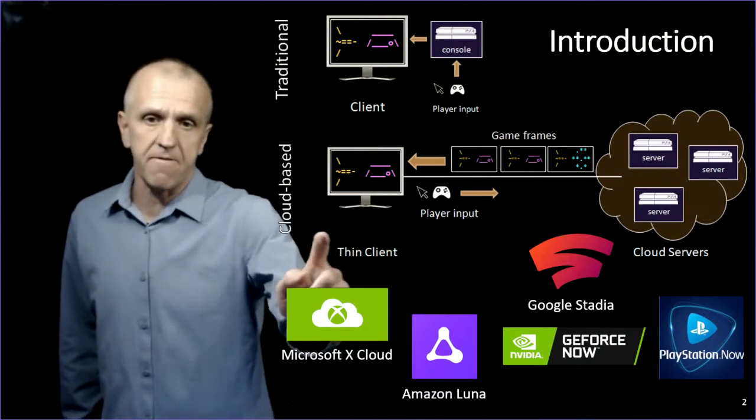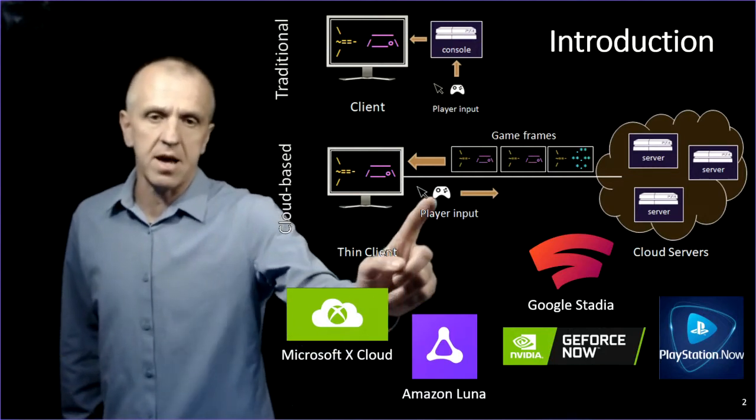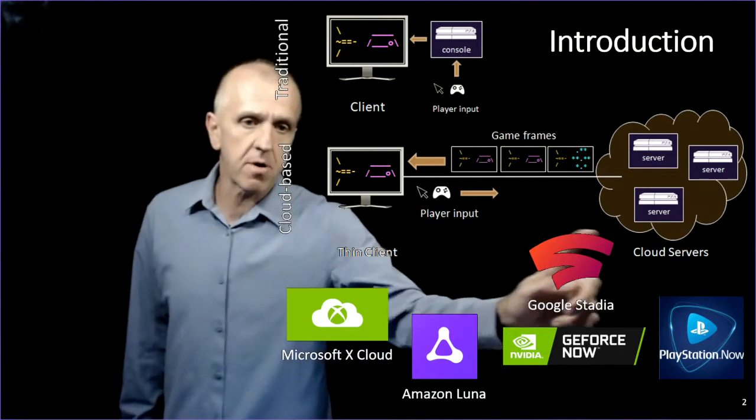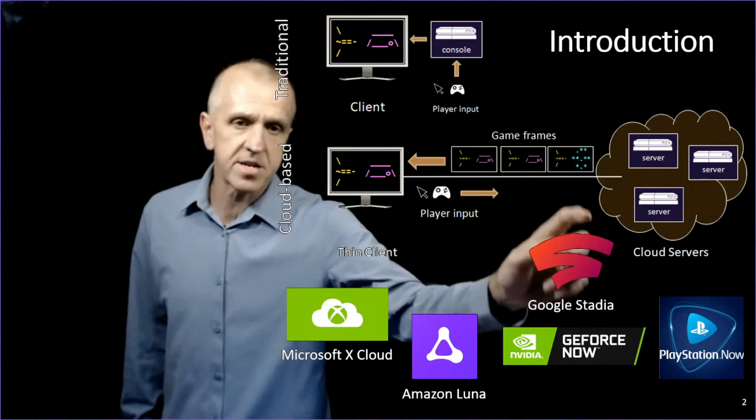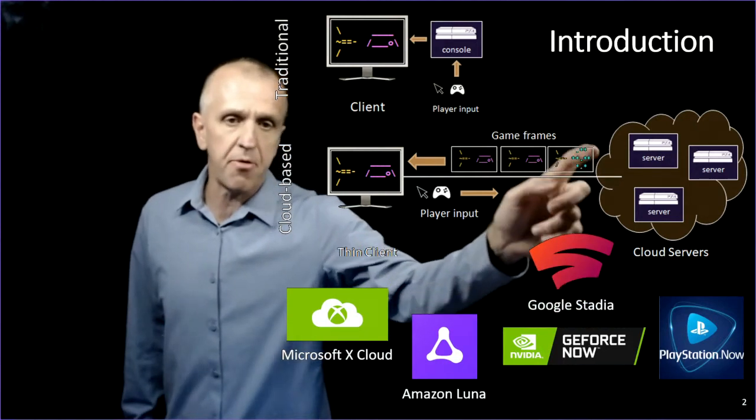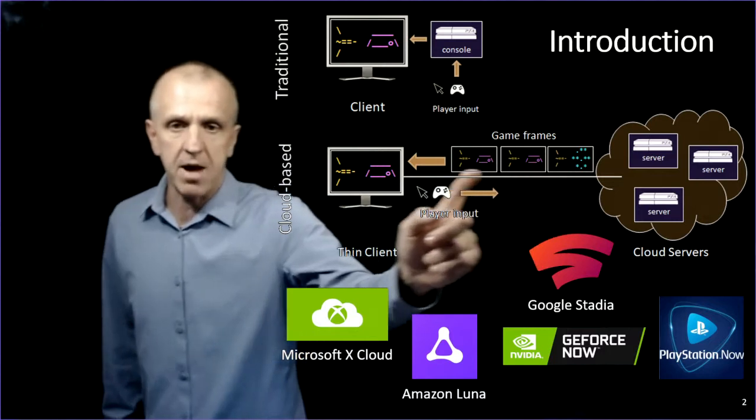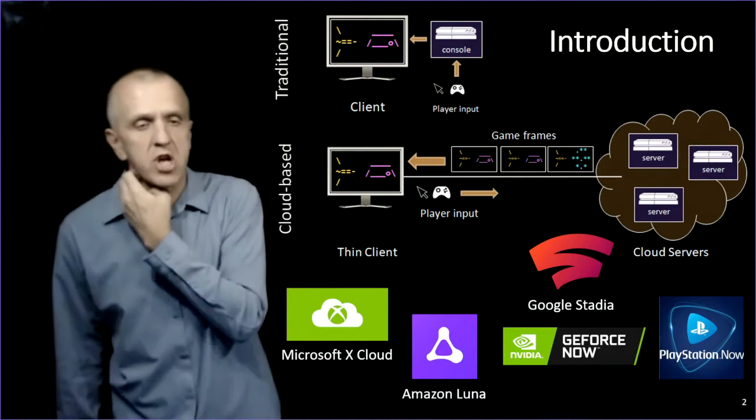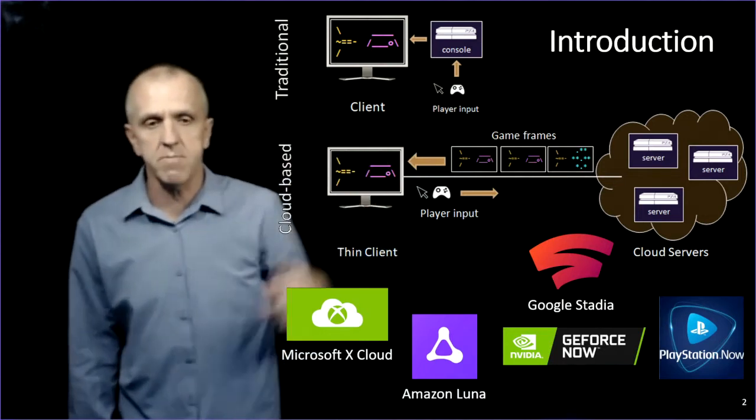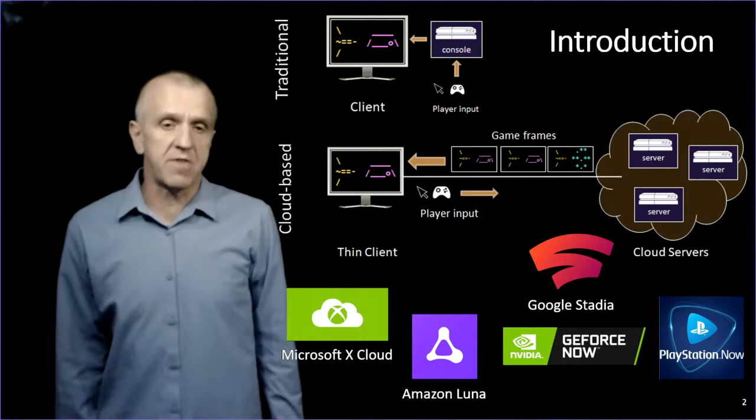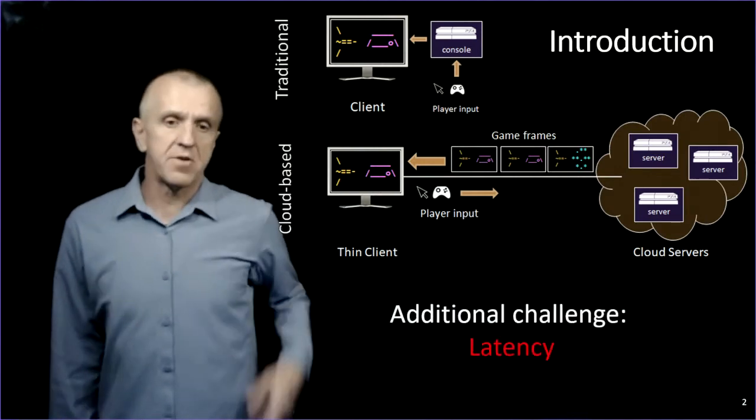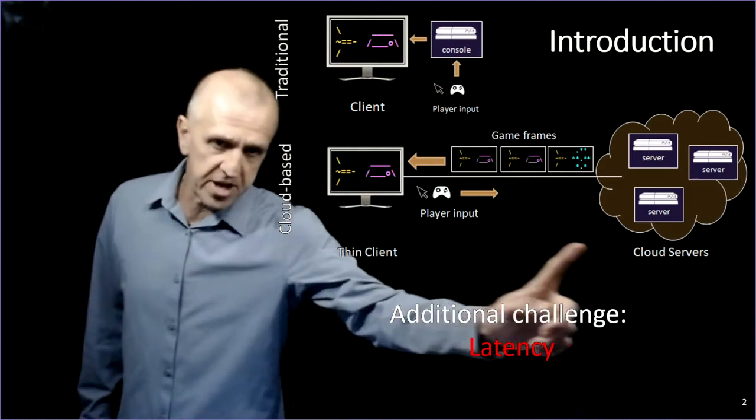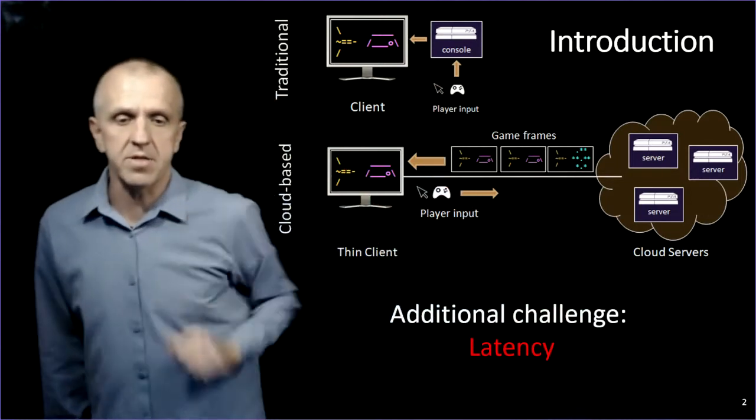But you still want to get all that to the player. So the player over here no longer has this full fat client. It has this thin client where you provide input in your living room. And all that input has to go up across the network to the cloud server where it gets processed. Now the frames are rendered as video and they're streamed down to the client. And so there's lots of advantages to this, but in particular, one major disadvantage is that there's now new latency.